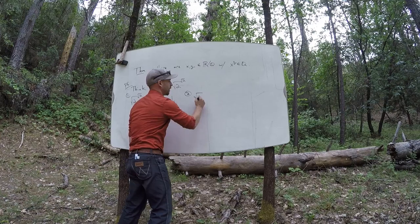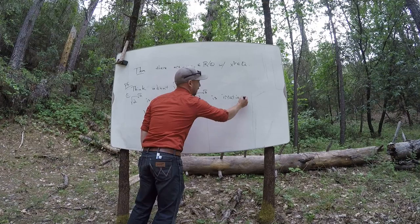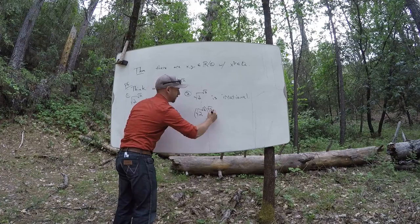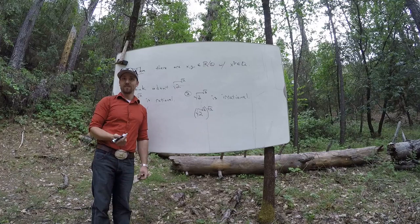right, the other option is that square root of 2 to the square root of 2 is irrational. Right? There's only the two options. So then you take this thing, and raise it to the square root of 2 power.